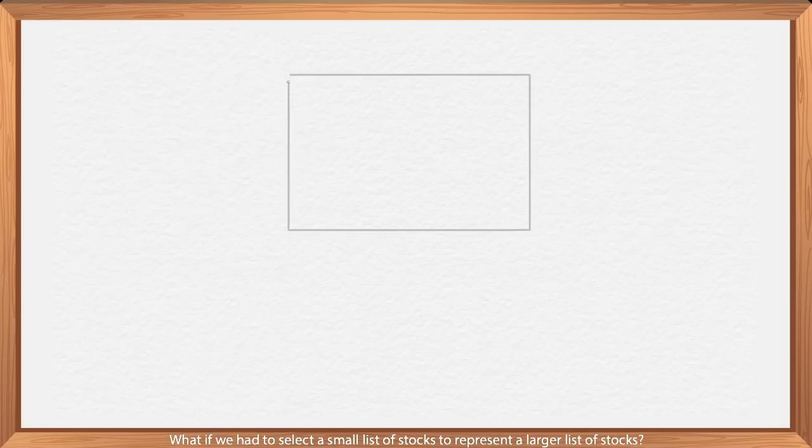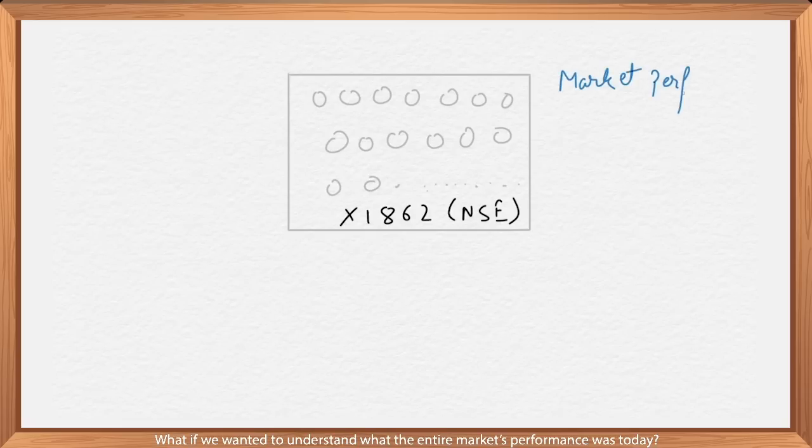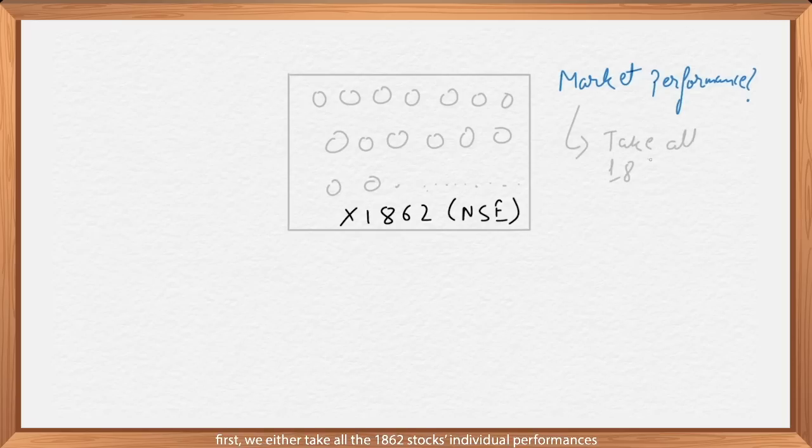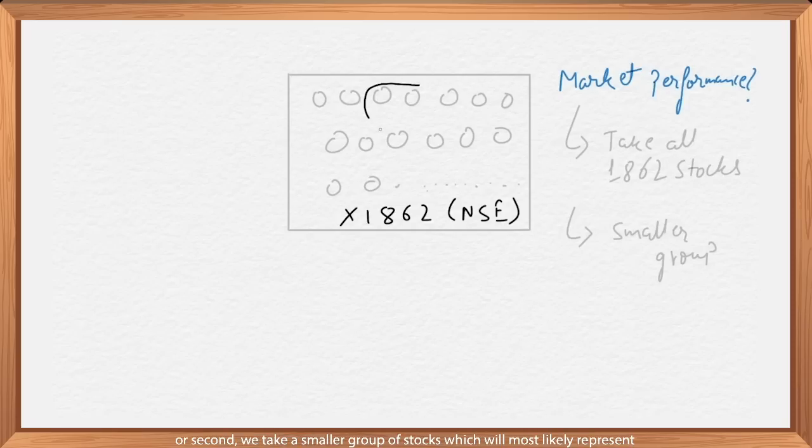What if we had to select a small list of stocks to represent a larger list of stocks? There are 1862 stocks listed on the National Stock Exchange, the NSE. What if we wanted to understand what the entire market's performance was today? There are two ways to do that. First, we either take all the 1862 stocks' individual performances, and then try to arrive at a weighted average return. Or second, we take a smaller group of stocks, which will most likely represent the performance of the market as a whole.